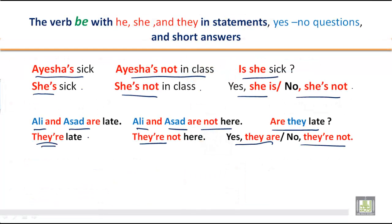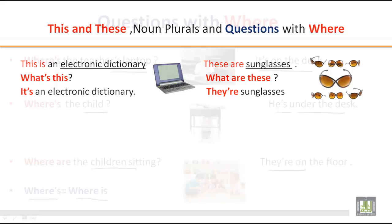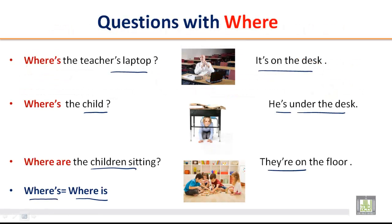So this is all for today. In this unit we practiced the form and usage of the verb 'be' with he, she, and they in simple present — including where to use he, she, and they in statements and yes/no questions. We also practiced 'this' and 'these', noun plurals, and questions with 'where'. Hope you have got enough idea about the usage of verb 'be' with he, she, and they. See you in the next class.